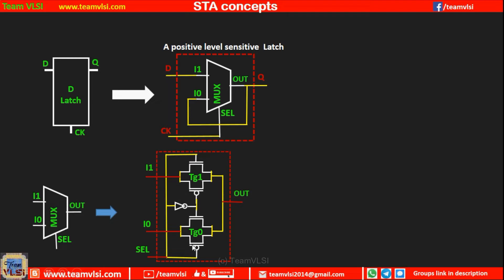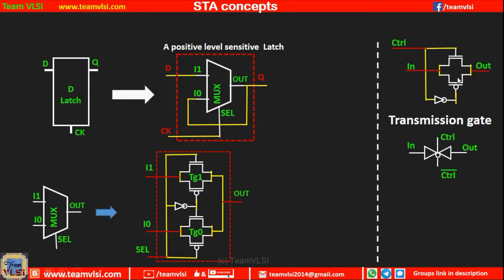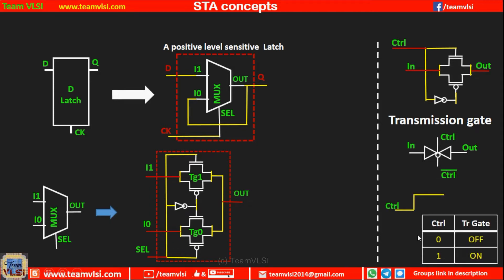A MUX can be realized using two transmission gates. A transmission gate is generally represented by a symbol where the control signal for NMOS and PMOS is opposite in nature. So for this example, if control is 0 then the transmission gate is off, and if control is 1 the transmission gate is in the on state.